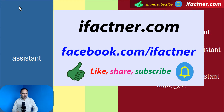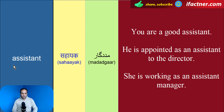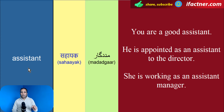Toh shurru kertay hain apna aaj ka video tutorial. Assistant ki spelling hoti hai A-double-S-I-S-T-A-N-T. Isko dho hisson mein divide ker layn: A-double-S-I-S yaani 'assist', aur T-A-N-T. Assistant ka matlab hota hai 'madad kerne waala'.